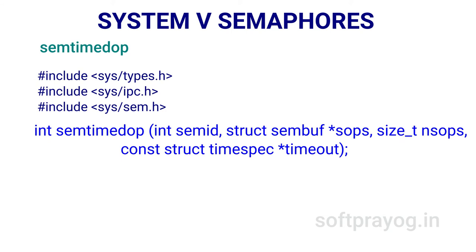Then there is semtimedop, which is the semop call with a timeout. The timeout is specified as the fourth parameter. If the corresponding semop operation would block, semtimedop would also block but only until the timeout. When the timeout occurs, semtimedop returns without changing any semaphore values and sets errno to EAGAIN. If timeout is NULL, semtimedop behaves just like the semop call.